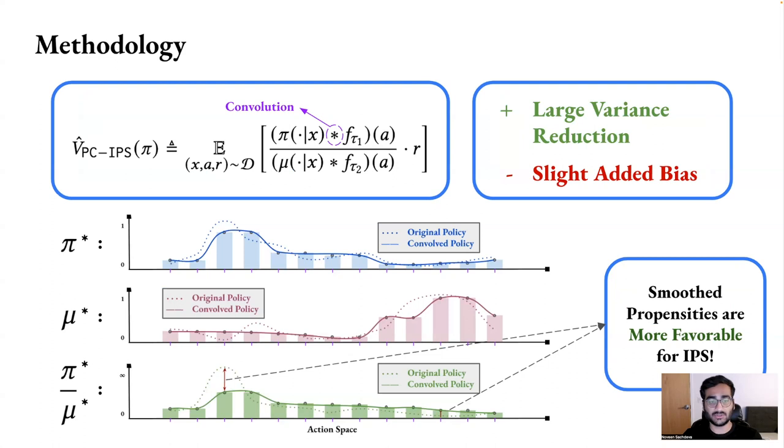So how do we use this structure to do off-policy estimation? The idea is very simple. We can use this structure to convolve or smooth our logging and target policies and get the new propensity ratio. And using the same example as before, we see that the policies are much smoother than before, which leads to a much smoother propensity ratio in the sense that there is a much lower maximum and a much higher minimum. So what this does is it leads to large variance reduction at the cost of a slight added bias.